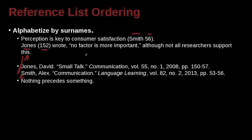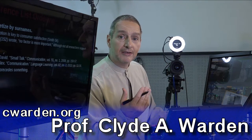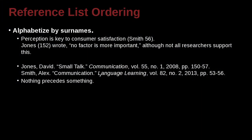A good thing to remember is that nothing precedes something. That is to say, if you have an empty space, or if you have 0 or A, they come at the beginning — but empty comes before 0 and before A. How is that possible? Well, it's possible if you have two authors with the same name, like Smith. So we could have Smith and Smith. If one is Smith Alex and the other is just Smith, then the plain Smith comes first and Smith Alex comes second.